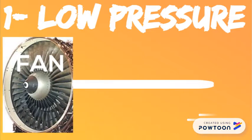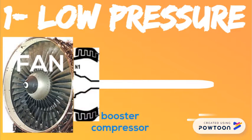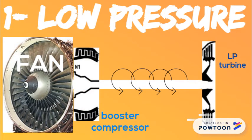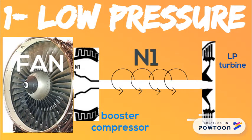The main component of the low-pressure components is the low-pressure rotor, which has the forward fan, the booster compressor, the low-pressure shaft, all driven by the low-pressure turbine. The speed of the low-pressure rotor is indicated on E-CAM as N1.